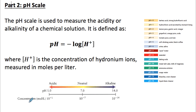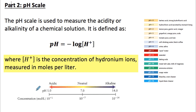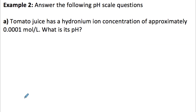Now let's go through three different applications of logarithms. The first is a chemistry application: when calculating the pH of a substance, we use the equation pH equals negative log of [H+], where H+ is the concentration of hydronium ions measured in moles per liter. The pH scale measures the acidity or alkalinity of a chemical solution. We're not focused on the chemistry details — we're just seeing these log functions have real applications.